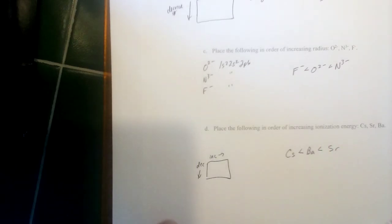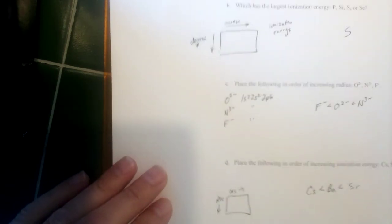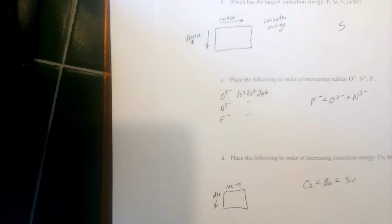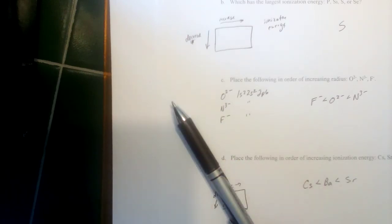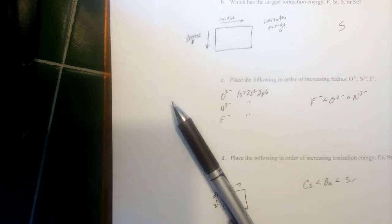Periodic properties like the ones in this last question also come from chapter seven. Chapter eight is basically about drawing Lewis structures — you should know how to apply the octet rule and how to calculate formal charge. Molecular shape, bond angles, and polarity from chapter nine will not be on this test but will be needed for the final exam.